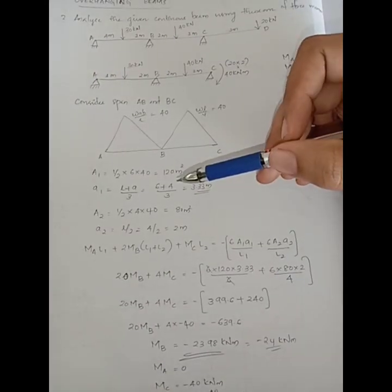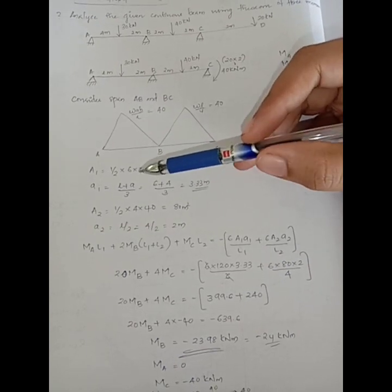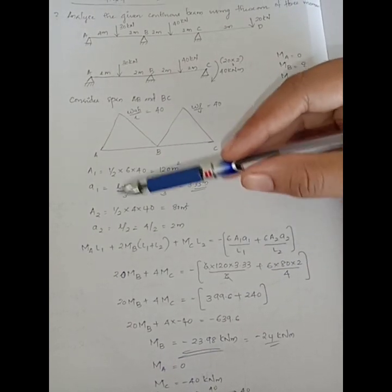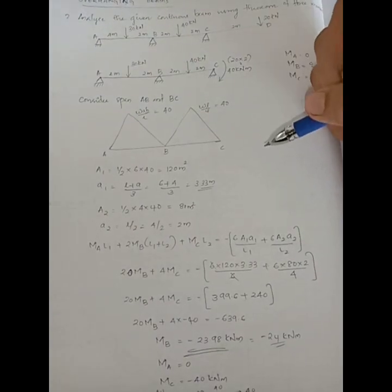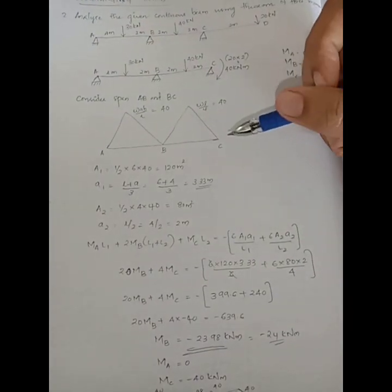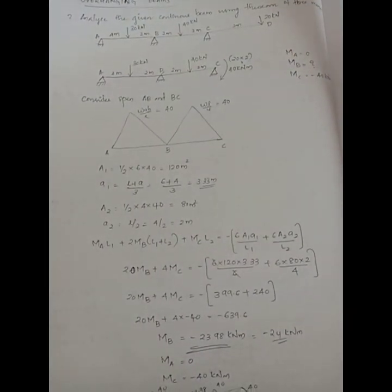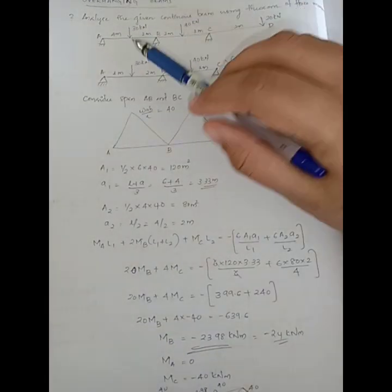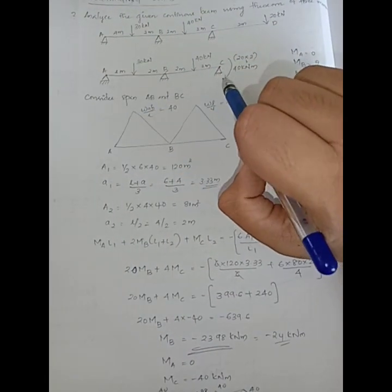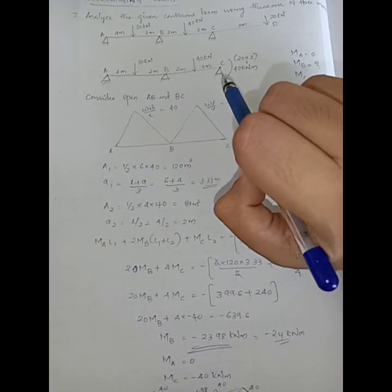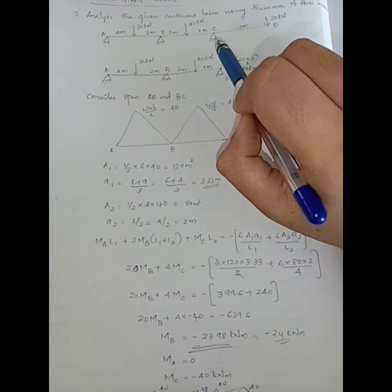In the free moment diagram, we will draw the area — A1 and A2. Now let's substitute. We have all the points. This is the simple support, so the moment values are 0.